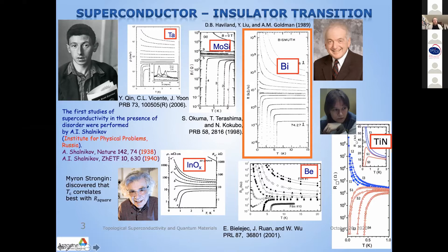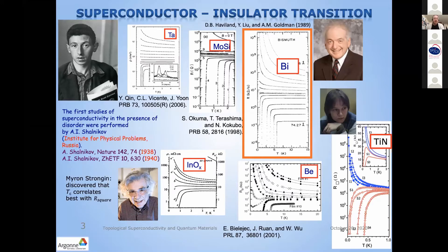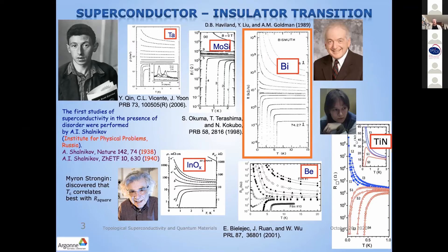Then there was a seminal contribution by Maren Strangin, who identified the right parameter driving the transition — the sheet resistance, or resistance per square. Coming back to this iconic picture by Alan Golden, we see a beautiful effect, which was first supposed to be impossible, because in two dimensions — and this is a two-dimensional film — a phase transition would look impossible. We see that with variation of sheet resistance, we can observe a transition from superconducting behavior to insulating behavior, confirmed by exhibiting thermal activation behavior, a sign of the insulator.